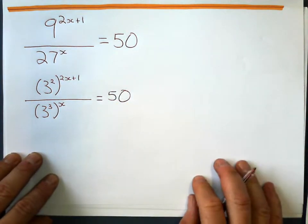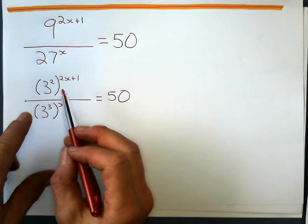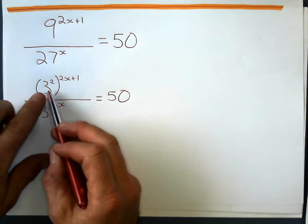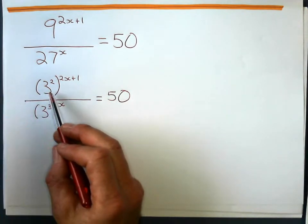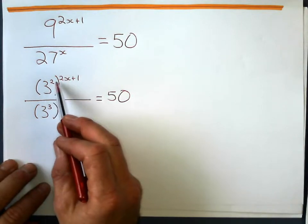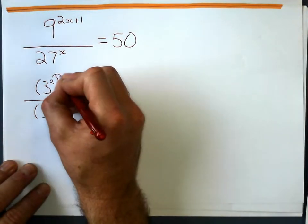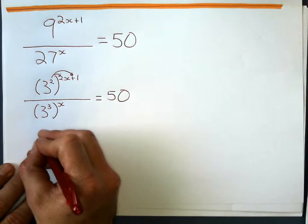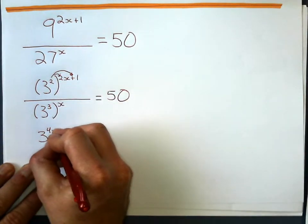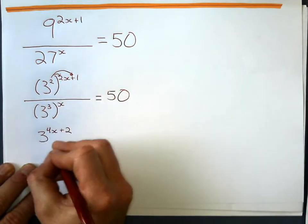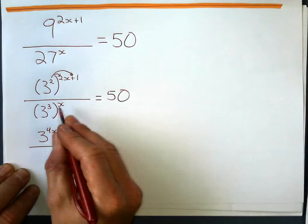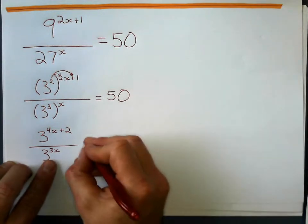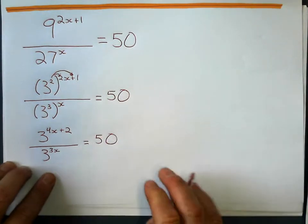Now what I do here is the power rules of power to a power, those get multiplied. I don't do anything with this 3 because this 3 is a base, it's not a coefficient. I can't do anything with that just yet. So power to a power gets multiplied. And when I multiply it, it's going to multiply to everything in there. So that top one is 3, 2 times 2x is 4x plus 2 times 1 is 2. And on the bottom part of the fraction, 3 times x is 3 to the power of 3x. Equals 50.